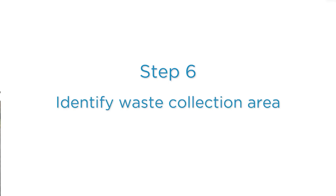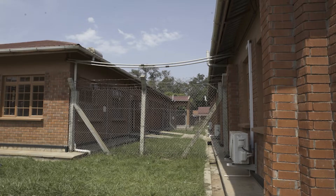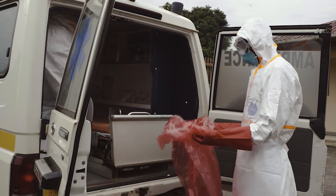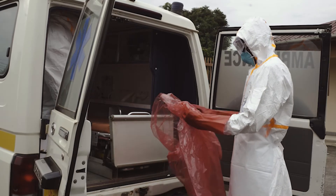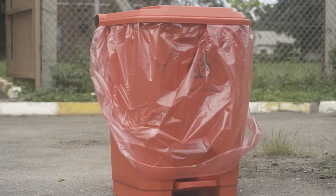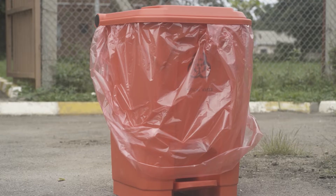Step six: identify waste collection area. Identify the area for collection of waste and soiled linen outside the ambulance. One person should be outside the ambulance with the bag or container open to collect waste and linen. This will be the clean outer container.